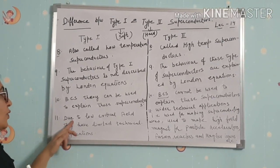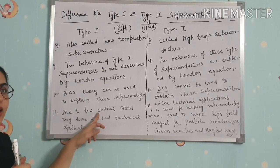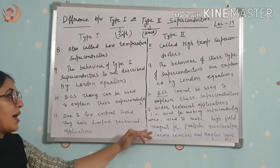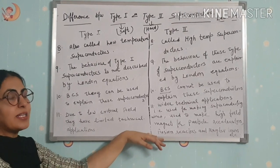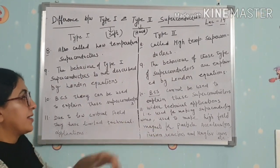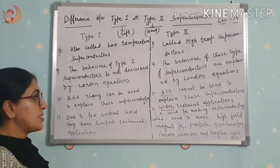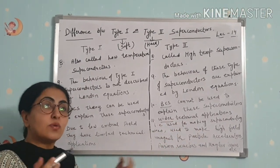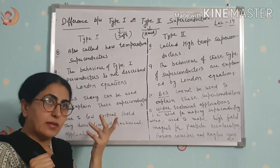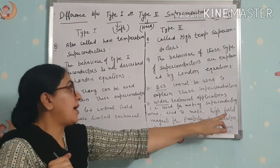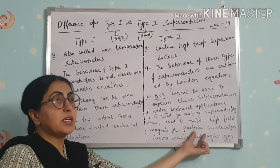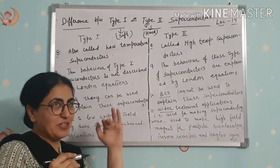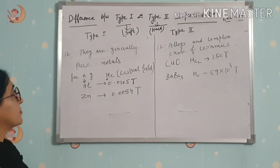Eleventh difference: due to their low critical field, Type 1 superconductors have limited technical or practical applications. Type 2 superconductors require a large field to revert to normal state, so they have wider practical and technical applications — they are used for making superconducting wires, which are used to make high-field magnets of up to about 10 tesla, used in particle accelerators, fusion reactors, and maglev trains.